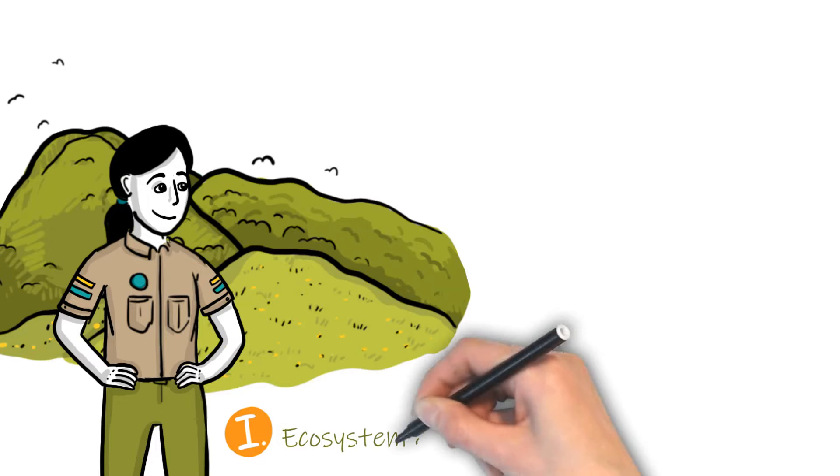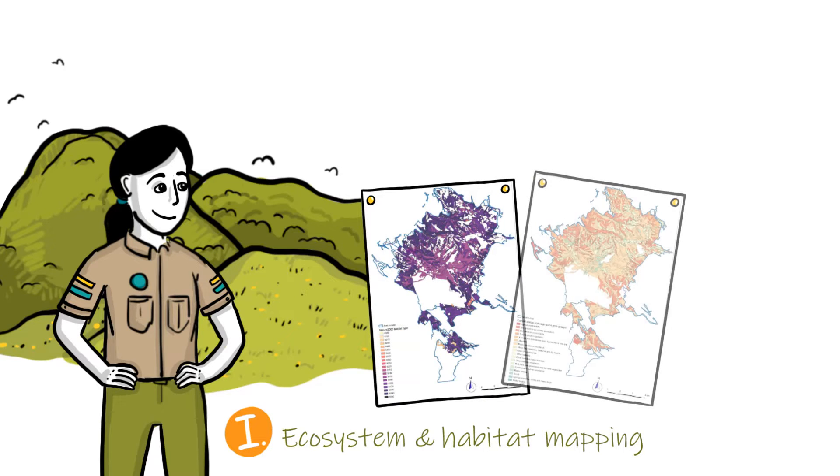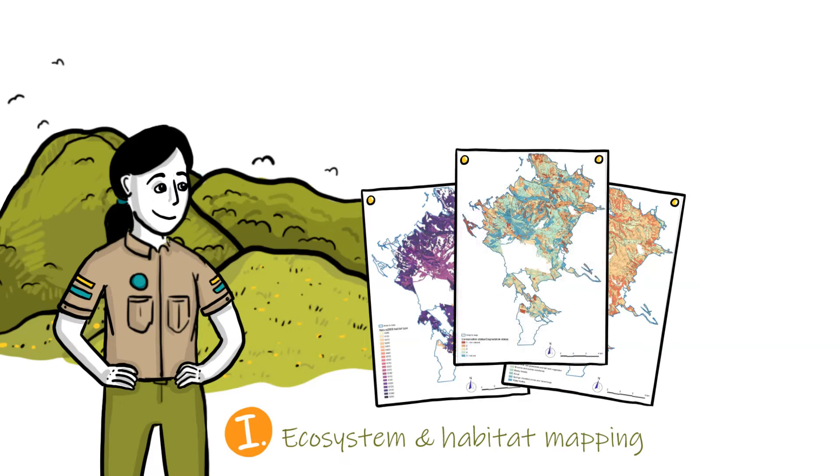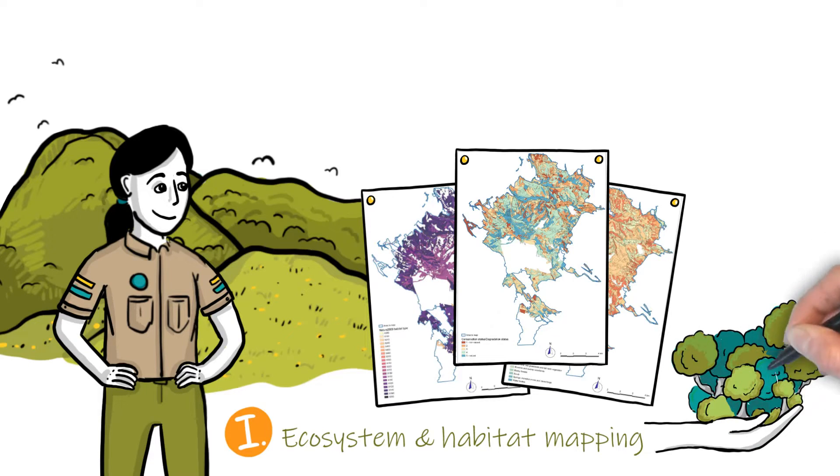The first step is to map different ecosystems and habitats to know which species live where. The state of forests should also be evaluated to create plans on how it can be used sustainably.